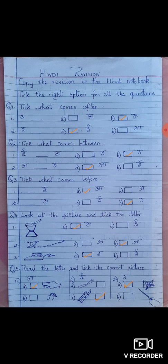Tick what comes after U. You are given 2 options A and U. So what comes after U is U. So you will tick U the B option.